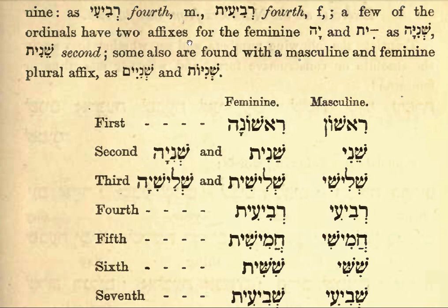A few of the ordinals have two affixes for the feminine — Ot and Yit — as in Shniya and Shnit, both meaning 'second.' Some are also found with masculine and feminine plural affixes: Shniyim and Shniyot.